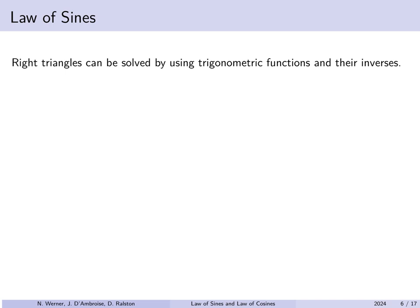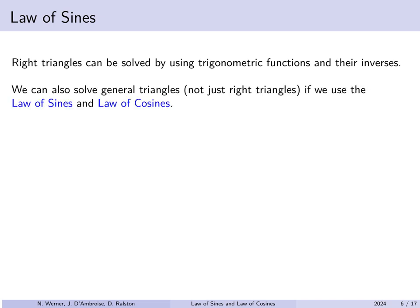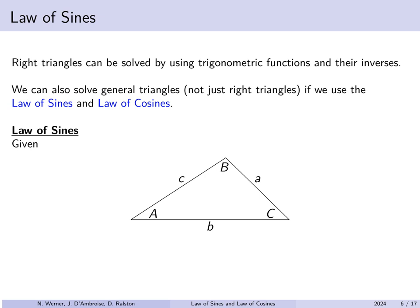We saw in the previous examples that right triangles can be solved using trigonometric functions, inverse trigonometric functions, and the Pythagorean theorem. Now, in general, if you have a non-right triangle, we can use what are called the law of sines and the law of cosines to solve triangles. The law of sines states that in a general triangle, angles A, B, and C are capital letters across from sides labeled a, b, and c with lowercase letters. Angle A is across from side a, and so forth. This is convention.